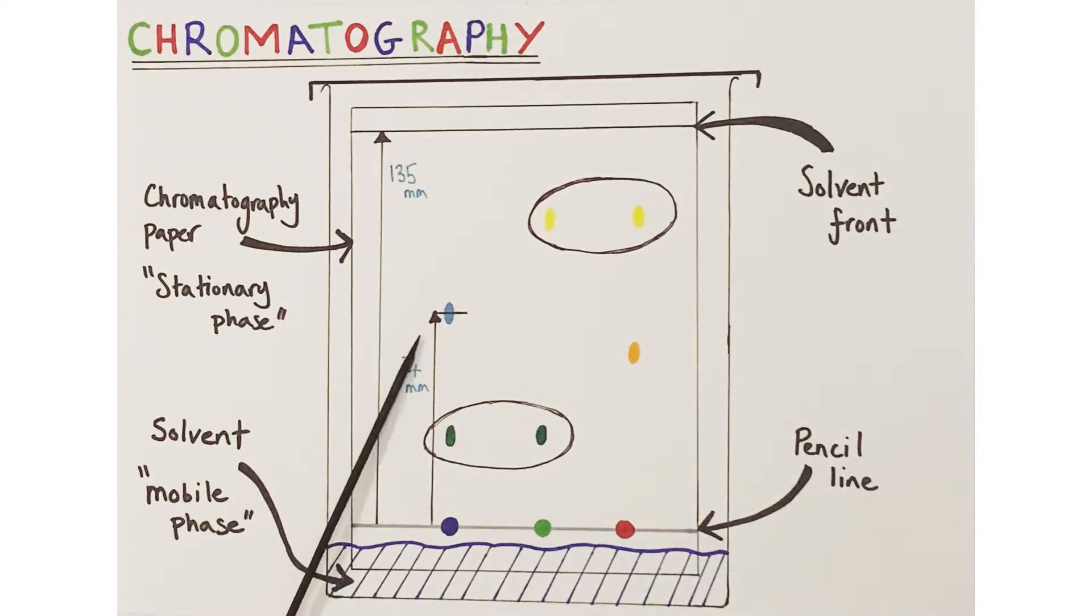Let's have a look at the light blue spot as an example of how to calculate an RF value. What you would do is you take a ruler and pencil and you would measure the distance from the bottom pencil line to the halfway point of the pigment spot itself and record that distance in millimeters. For this particular example, that would be 74 millimeters.